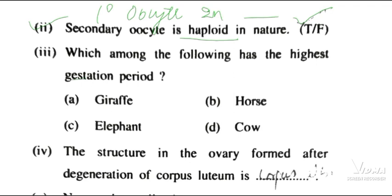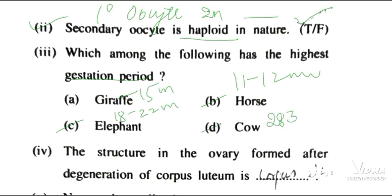Which of the following has the highest gestation period? The giraffe has 15 months, the horse has 11 to 12 months, the elephant has 18 to 22 months, and the cow has 283 days. So our right answer is the elephant.